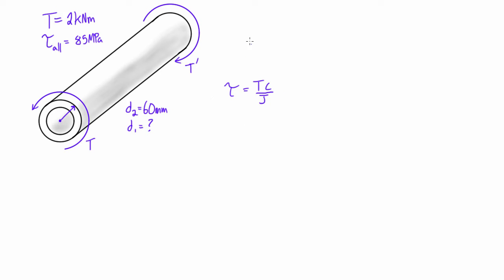So first we want to fill out some of these things. Let's figure out what J is. J is going to be equal to pi over two times c2 to the power of four minus c1 to the power of four. If we plug in our values that we know, c2 will be half of this, it will be 30 millimeters, but we put this into units of meters. So we get pi over two times 0.03 meters to the power of four, and we don't know what c1 is, so we'll just say minus c1 to the power of four.